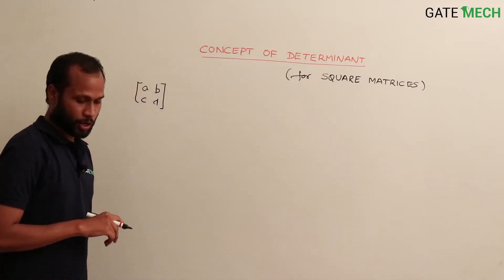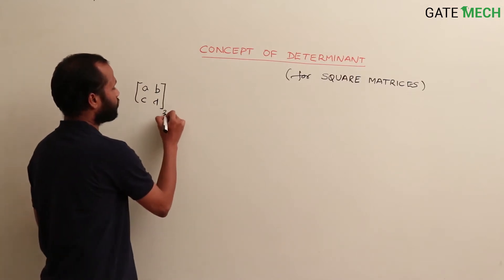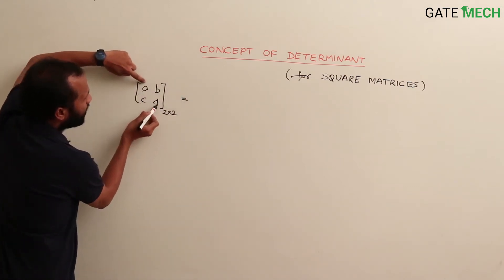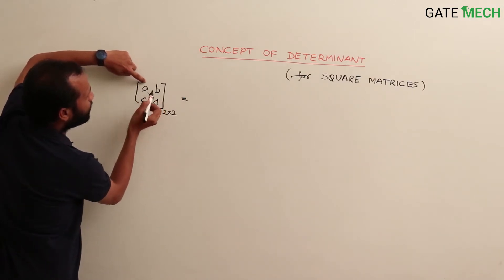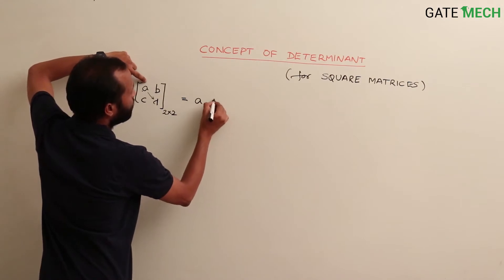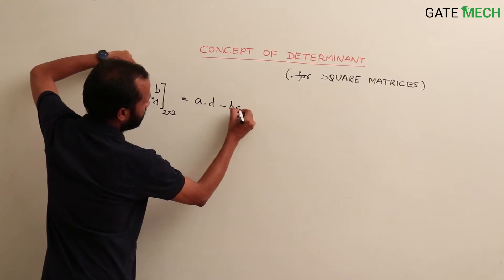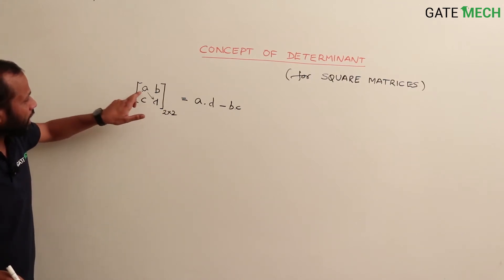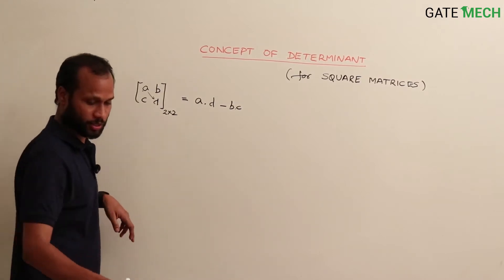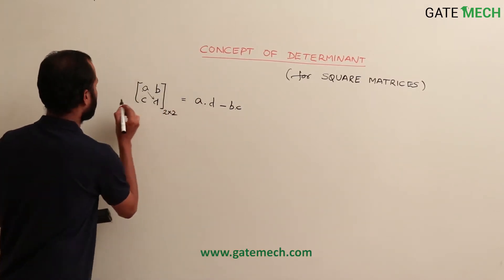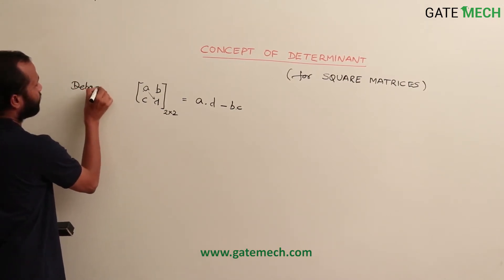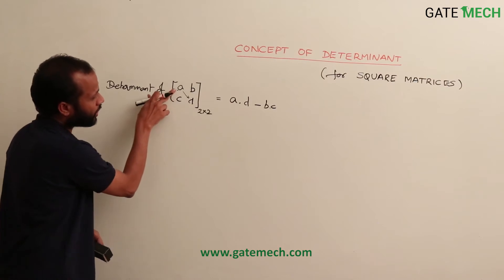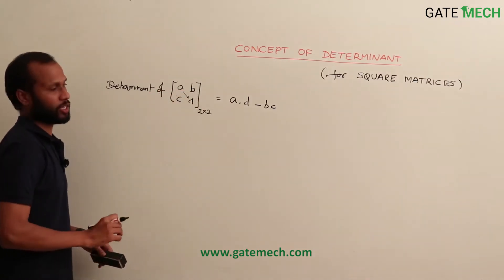This is defined only for square matrices. Now I have a small matrix a, b, c, d whose size is 2 by 2. The determinant of this matrix is defined as a into d minus b into c. So the determinant of the matrix a, b, c, d is equal to a·d minus b·c.